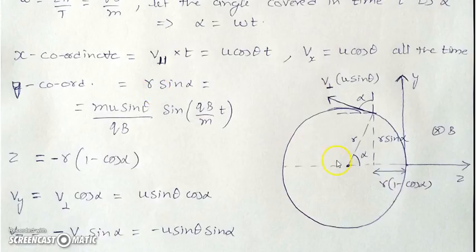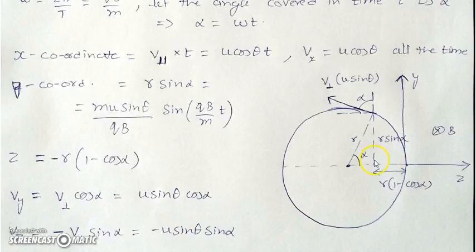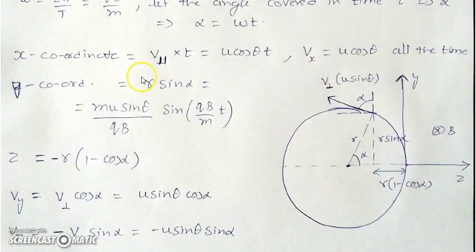Now for the y and z coordinates, observing the motion in the y-z plane: the y-coordinate is R sinα, and the z-coordinate is −R(1 − cosα). This is because the distance from center to particle projected is R cosα, and the remaining distance from origin is R(1 − cosα). The negative sign indicates that the particle will always be on the negative z-axis.